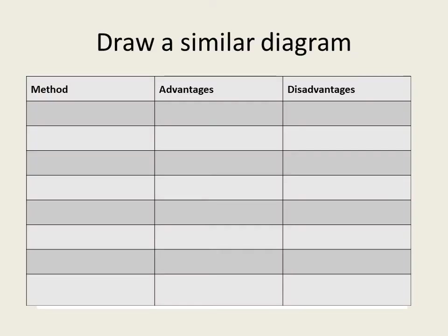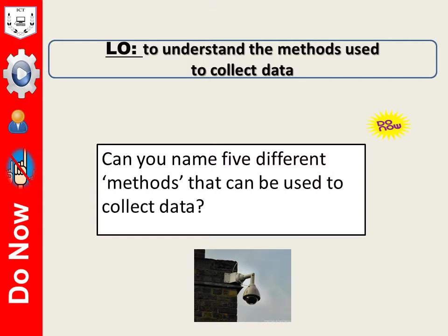What I'd like you to do is draw a simple diagram which has got method, advantages and disadvantages going across the top, and then there's enough space underneath to write about 8 different sections. Today's learning is going to be to understand the methods used to collect data. The do now task is: can you name 5 different methods that can be used to collect data?